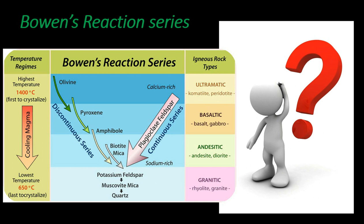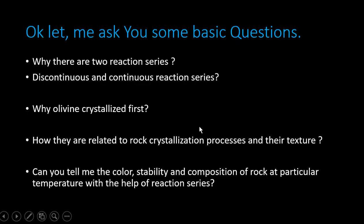The key questions to consider are: why do we need to study Bowen's Reaction Series? How does this reaction relate to the crystallization process? Does it affect the crystal texture and color of a rock? And most importantly, why does olivine crystallize first rather than pyroxene? What is the difference between the discontinuous and continuous series?